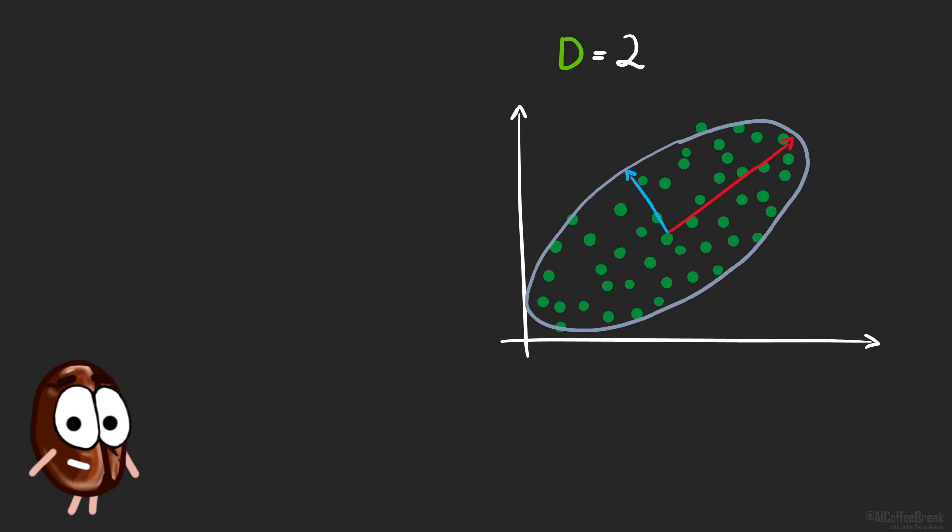These axes, which are called principal components, are exactly the directions we are looking for. We can keep the most important principal components and throw away the other ones. But intuition does not compute stuff for us, math does. So let's see how we would do this mathematically by setting up the PCA algorithm.